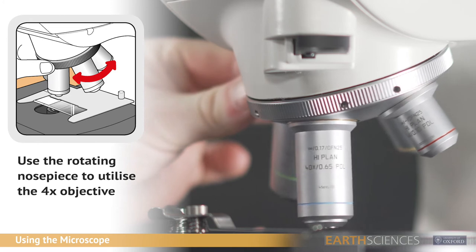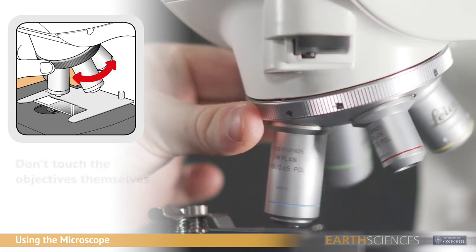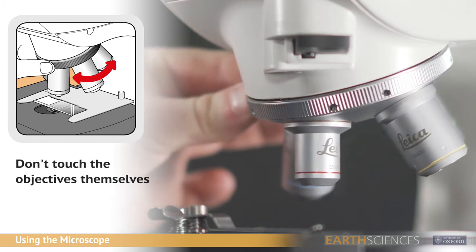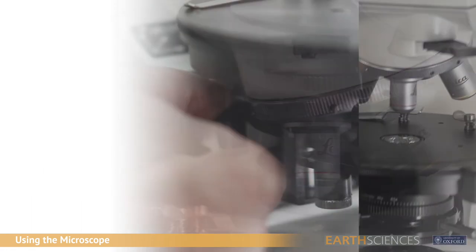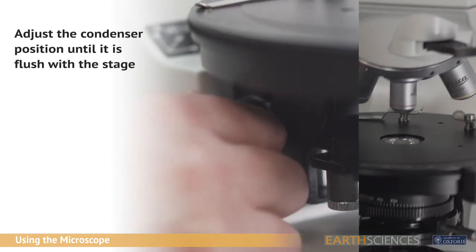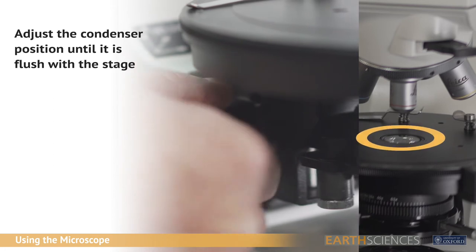Use the rotating nose piece to adjust the microscope to the 4x position. Don't handle the objectives themselves as this could damage the microscope. Use the condenser height focus knob to adjust the condenser until it's flush with the stage.